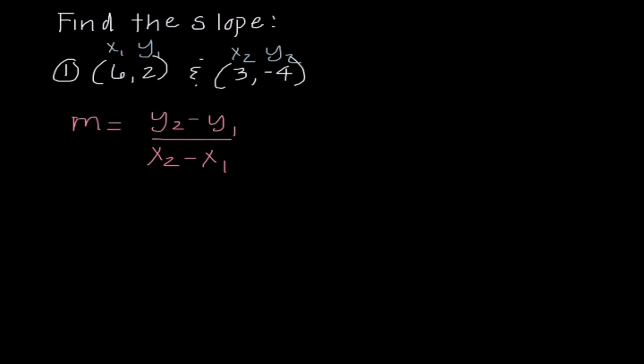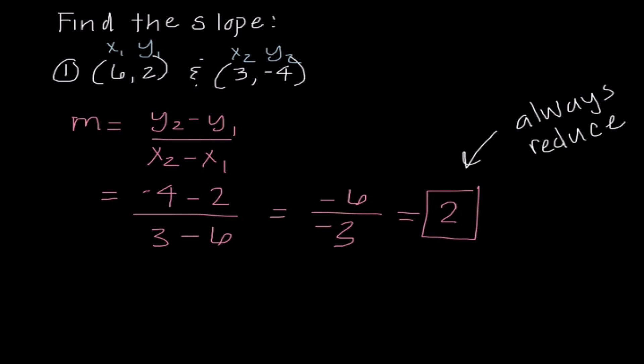Now, I'm going to go ahead and substitute in these values. So I have negative 4 minus 2, which we know is negative 6, over 3 minus 6, which is negative 3. I need to reduce this further, so our answer is 2. We know having a slope of 2 means we are going up 2 to the right 1. We could also think of it as going down 2 and to the left 1.